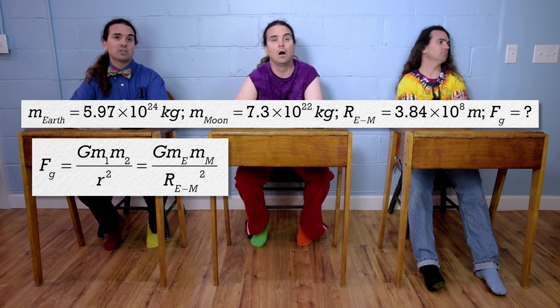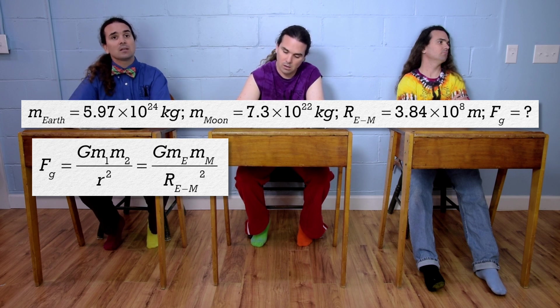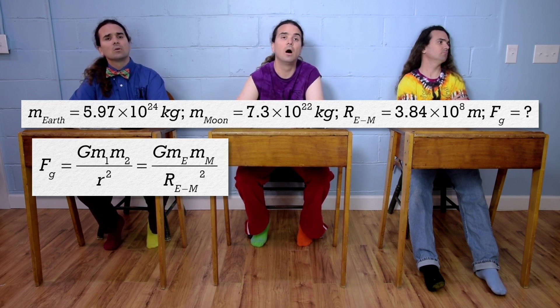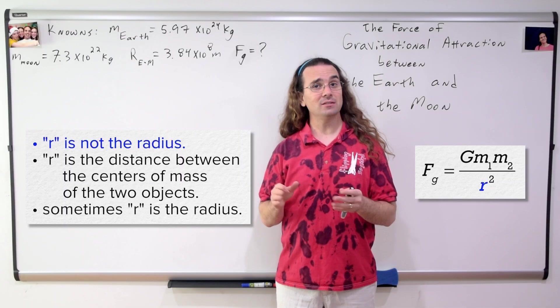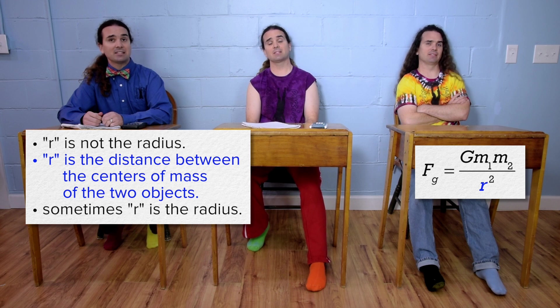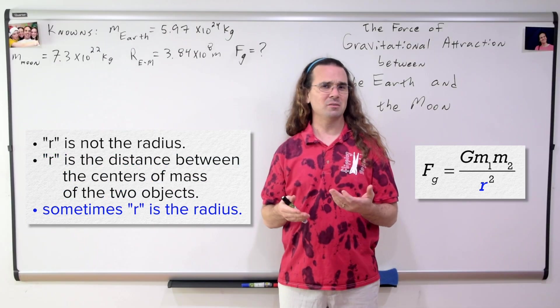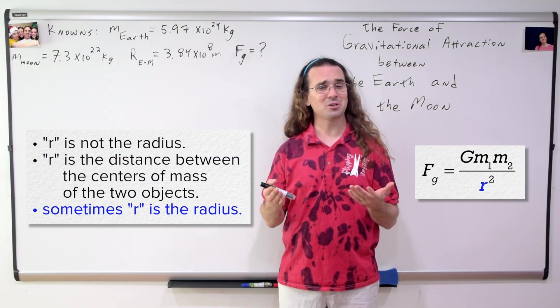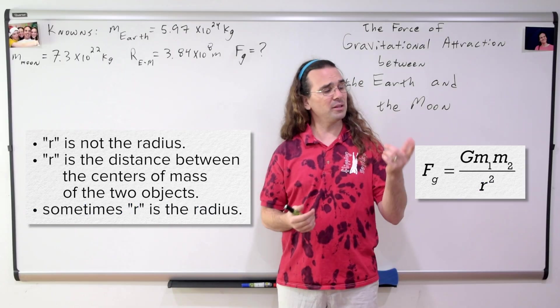And then we get—Billy, let's review that for just a second. Class, r is not? The radius. R is? The distance between the centers of mass of the two objects. This can be confusing because sometimes r is? The radius. Thanks. Billy, please continue.